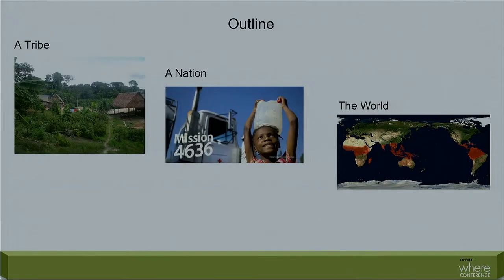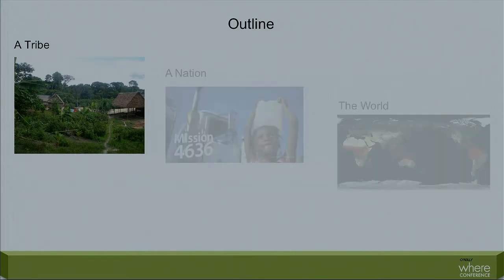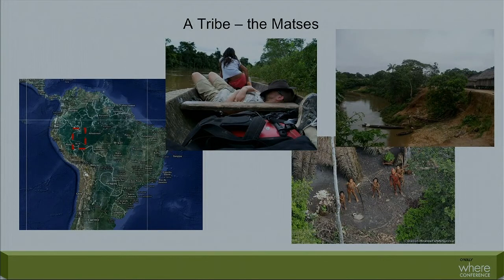We'll talk about three different initiatives that I've worked on over the last three years: about a tribe in the Amazon, about a nation, and then about the world as a whole. Starting with the tribe — they're called the Matses. There are about 3,000 speakers of the language of the same name in the Peruvian Amazon. It's quite remote; it took about eight days to get there. It's the same valley as the so-called uncontacted people that you've probably seen in National Geographic.